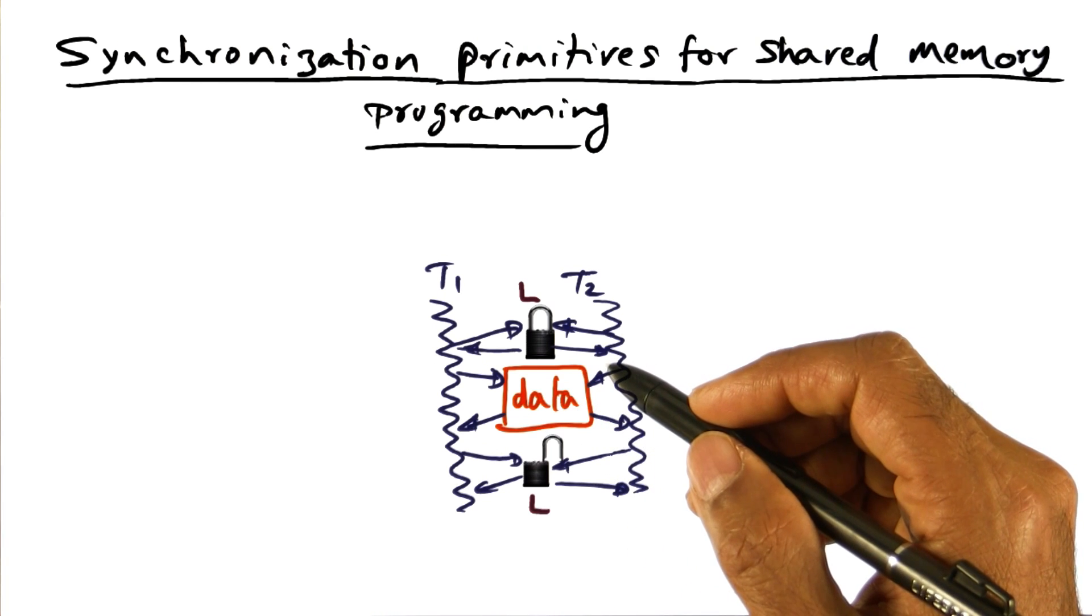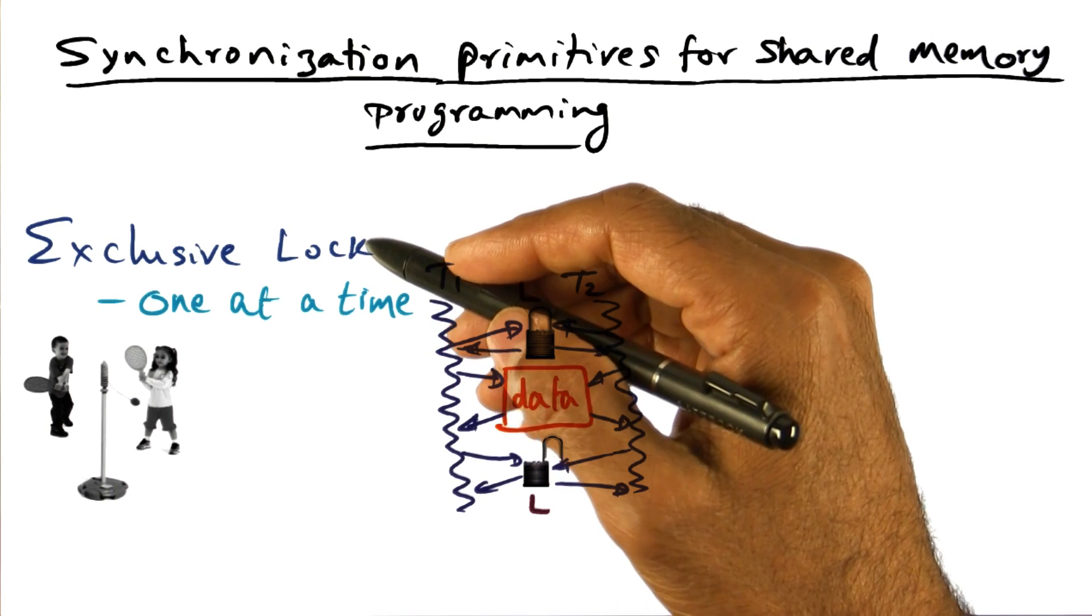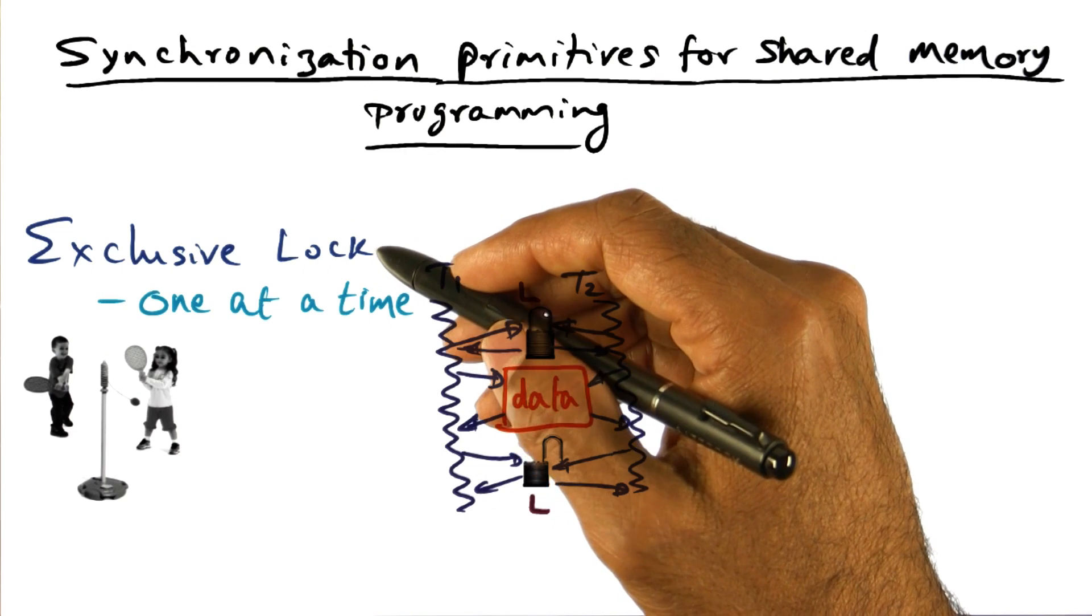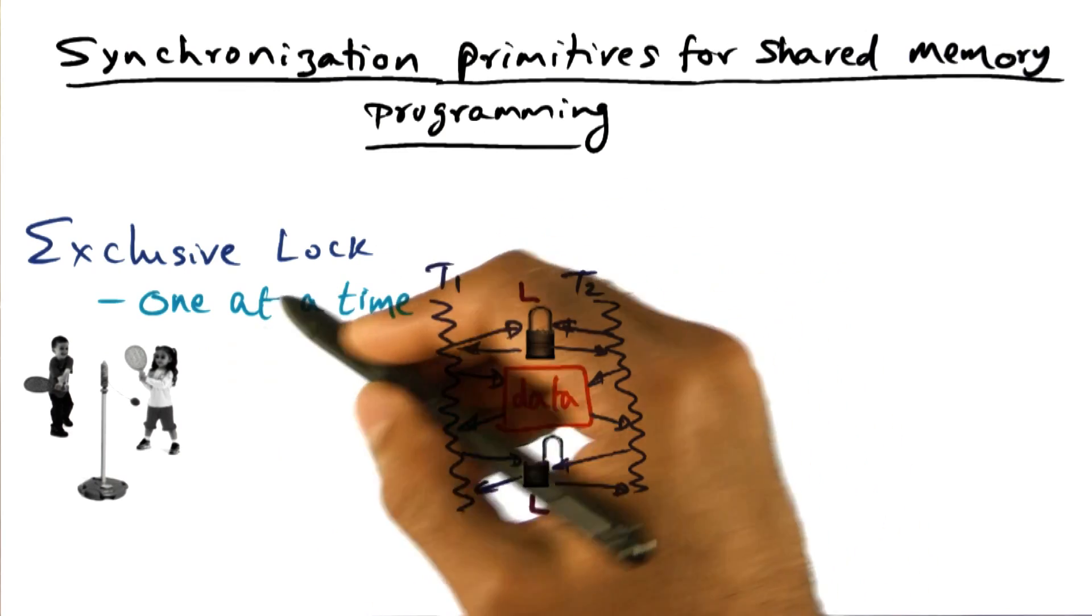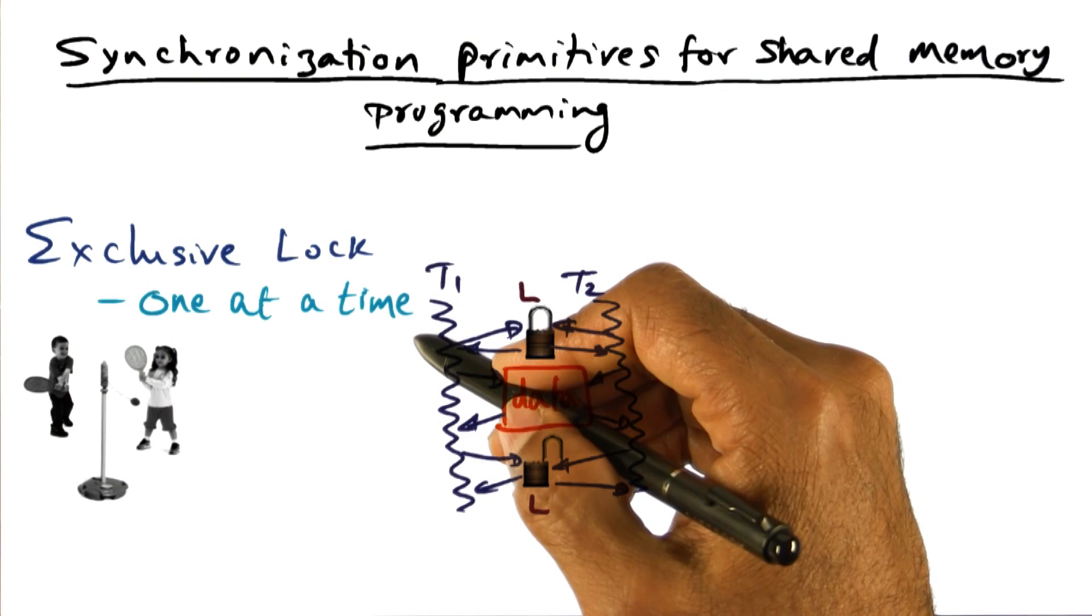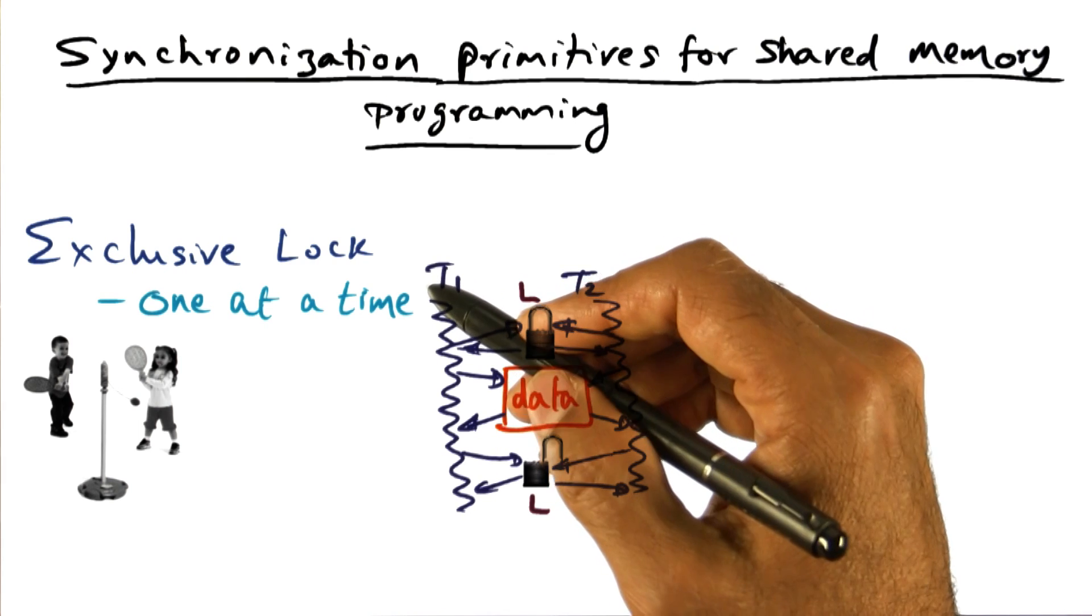And locks come in two flavors. One is what we'll call an exclusive lock, or a mutual exclusion lock. And this is exactly the one that you implemented in your first project. And the idea is, as the name suggests, a mutually exclusive lock means that it can be used by a thread, one thread at a time. That's the idea.